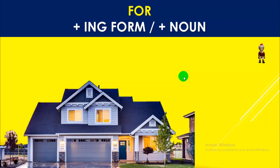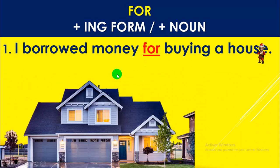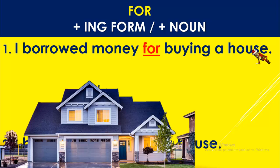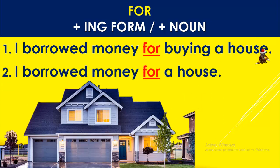Next example: I borrowed money for buying a house. J'ai emprunté de l'argent pour acheter une maison. Or: I borrowed money for a house. J'ai emprunté de l'argent pour une maison. Pour acheter une maison — pour une maison. You can have ING form or a noun.